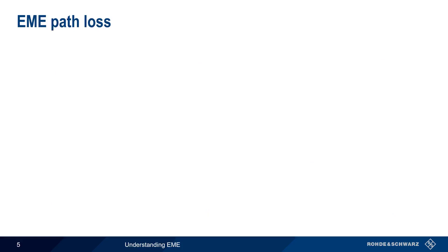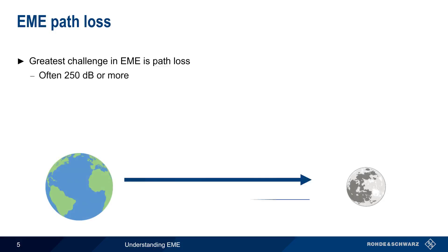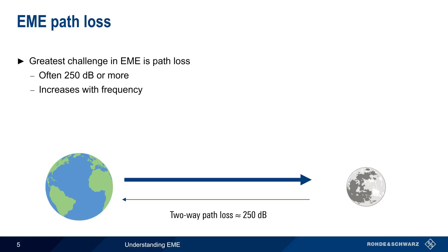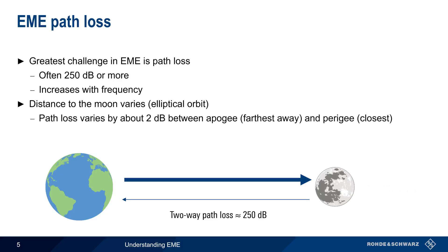We'll start with path loss. Path loss is, by far, the greatest challenge when using EME. The two-way path loss between the Earth and its moon is often 250 dB or more, and this path loss increases with increasing frequency. Path loss is a function of many factors, one of which is the distance between the Earth and its moon, which changes due to the moon's elliptical orbit. Path loss can vary by about 2 dB between apogee, when the moon is farthest away, and perigee, when the moon is closest to Earth.